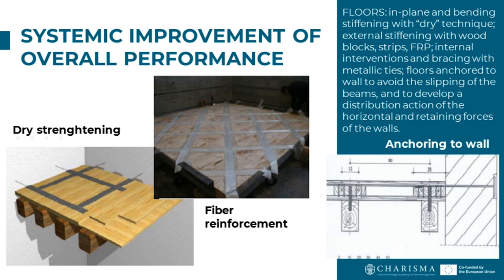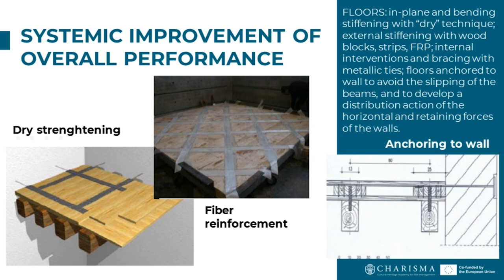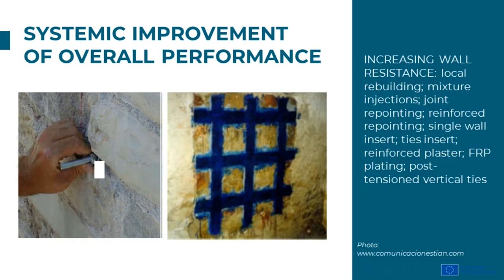Internal interventions can be carried out using bracing with metallic ties. It is important that floors are properly anchored to walls to avoid the slipping of the beams and to develop a distribution action of the horizontal and retaining forces of the walls. Similarly, roof structures can be retrofitted using metallic or fiber reinforcement. In this slide we can see an example of strengthening using metal ties.